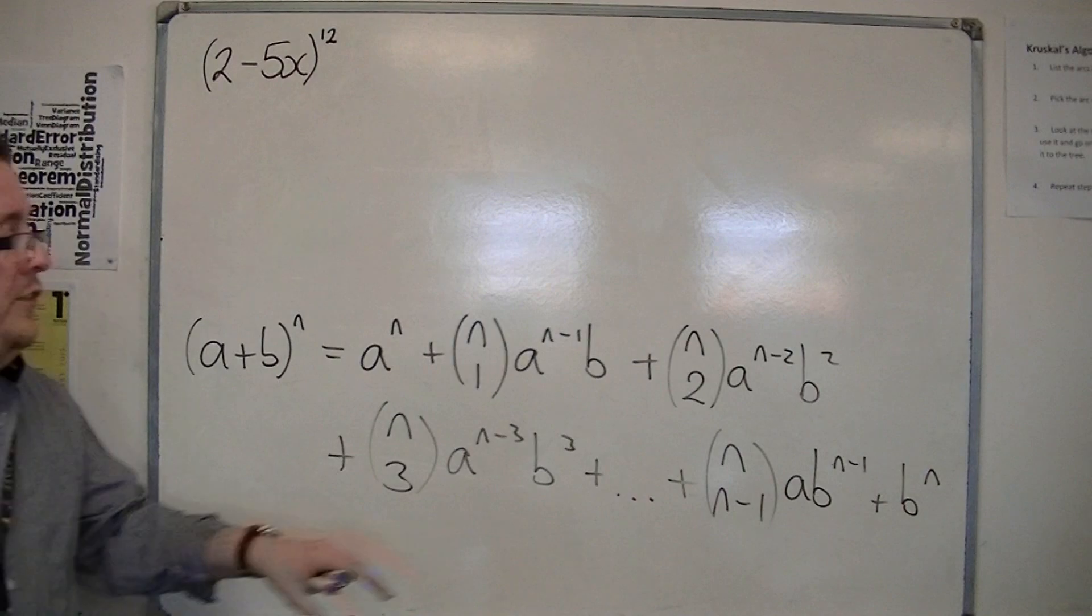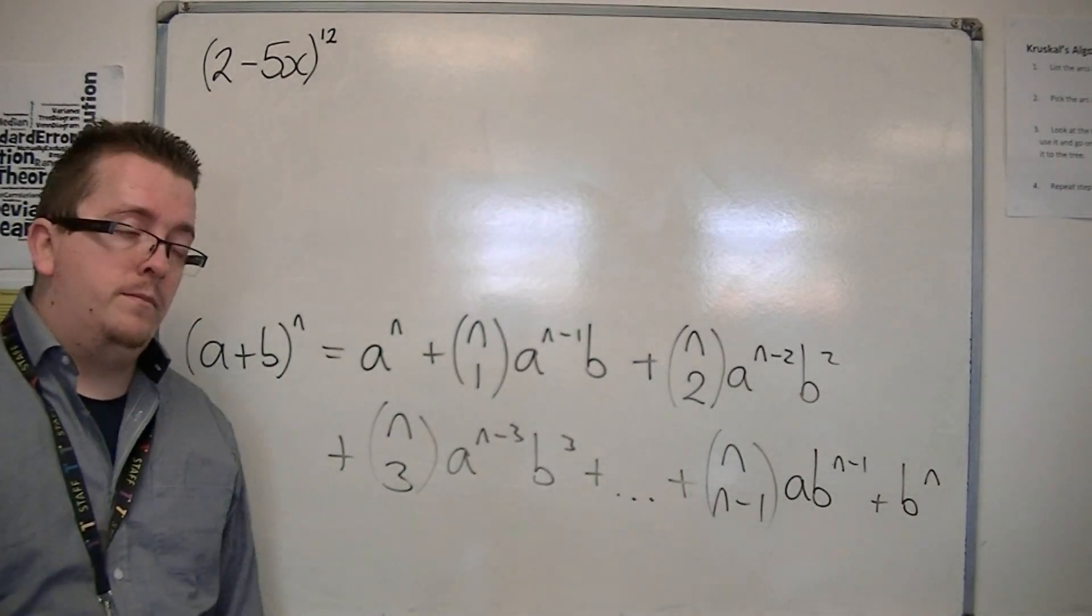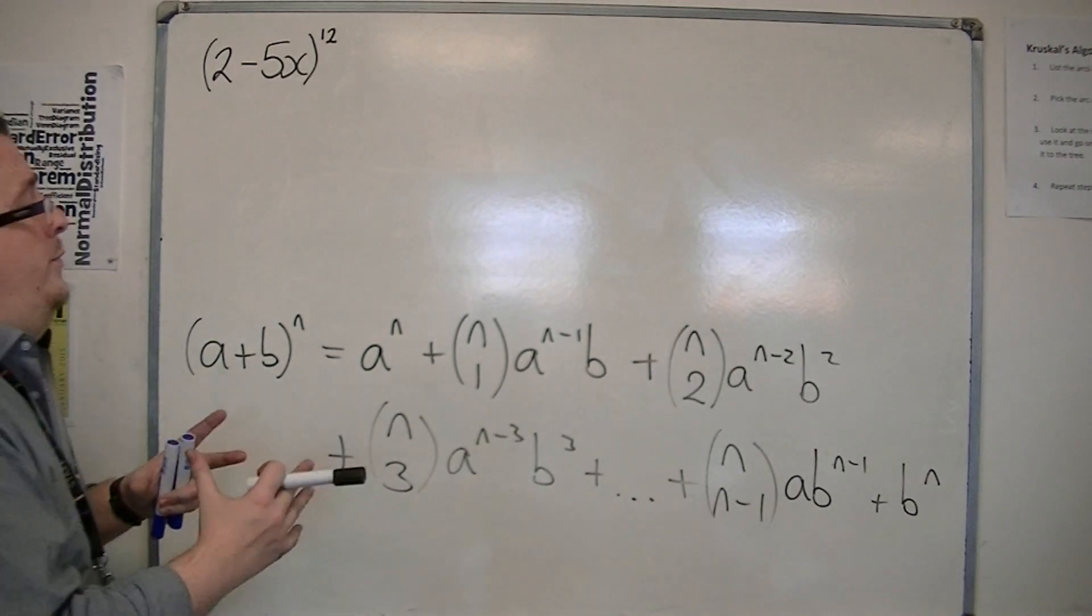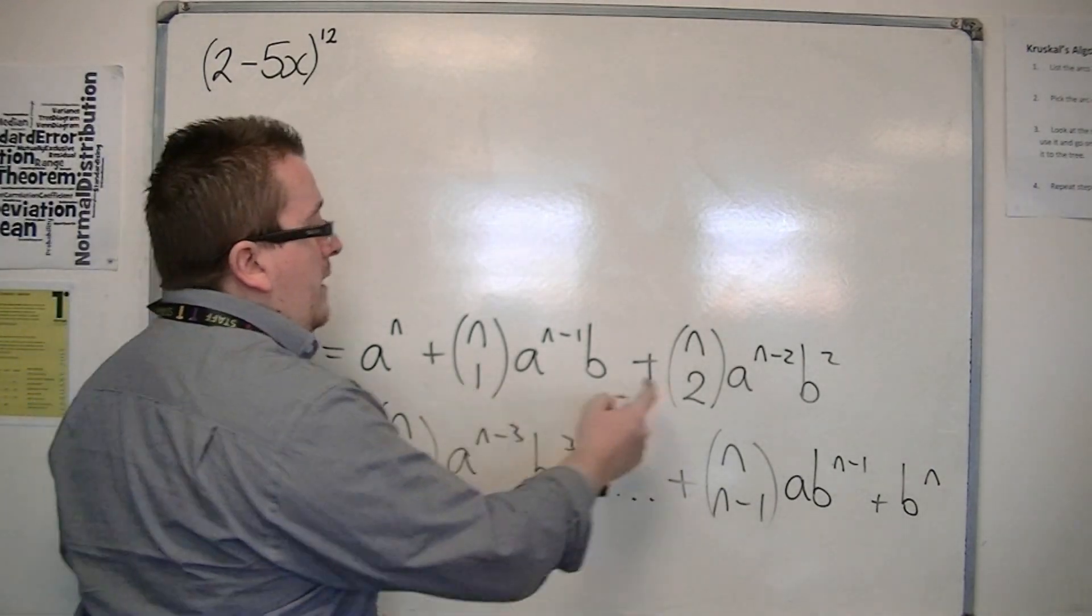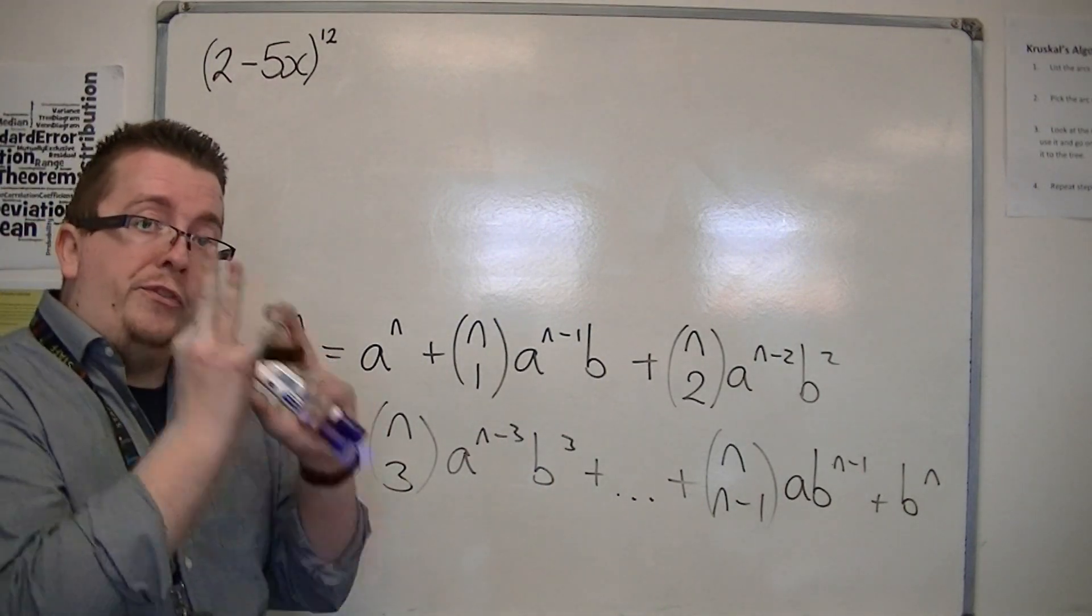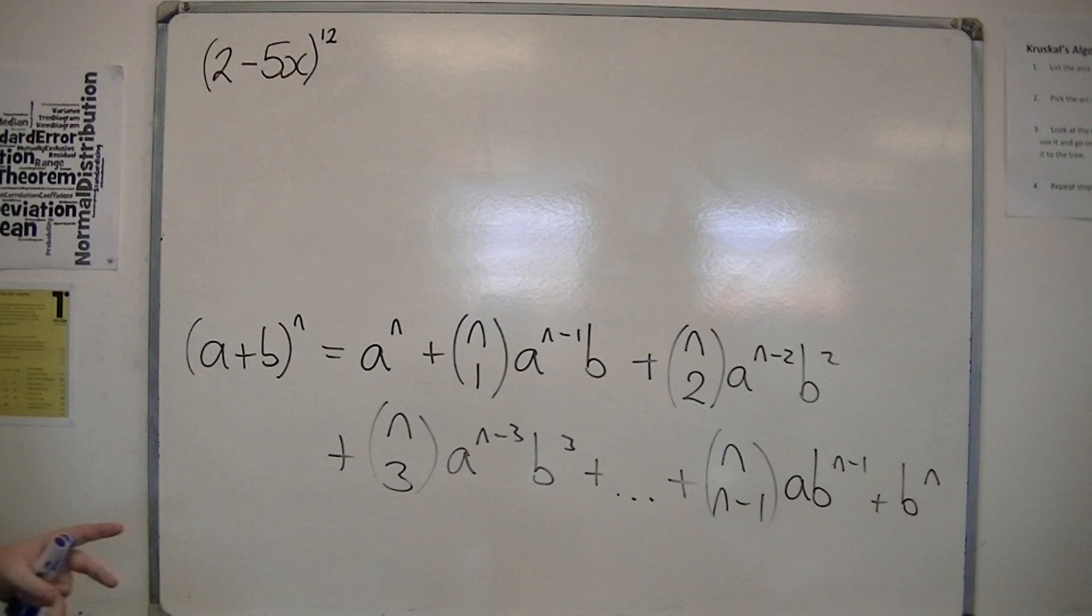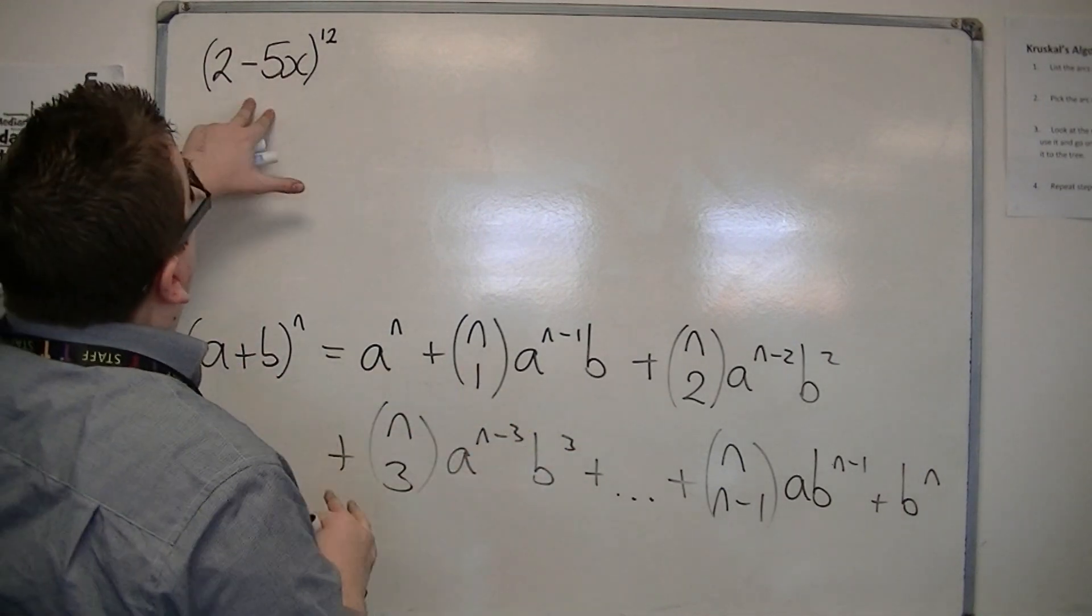So you use the NCR function to identify the position in Pascal's triangle that you need. And this is the formula that we're going to use to expand this.